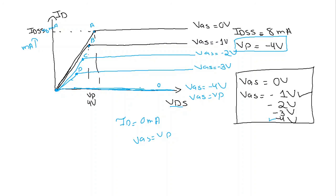So the condition where ID is equal to 0 milliampere is defined by VGS equal to Vp. As you can see, we have VGS equal to Vp, that is why we have ID equal to 0 milliampere. This Vp is a negative voltage for N-channel devices. We have drawn this graph for N-channel devices, that is why this is negative. For P-channel devices this is going to be positive. So this was the output characteristic graph of the junction field effect transistor.